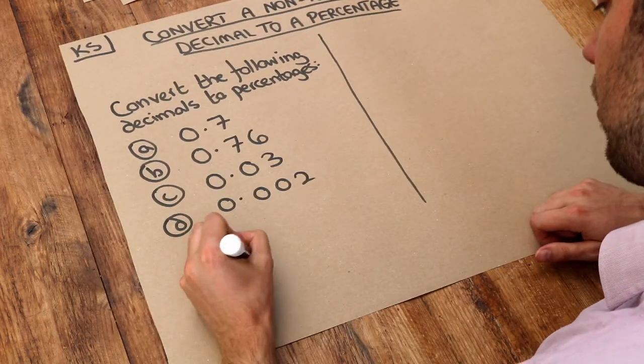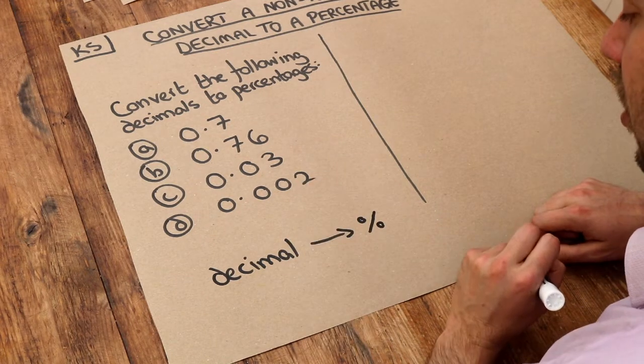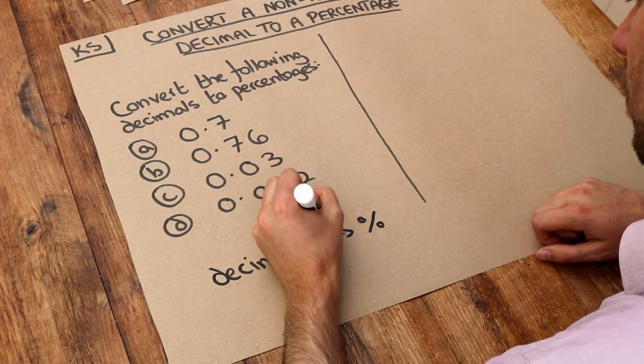If we have a decimal and we want to convert it to a percentage, all we need to do is multiply by 100.